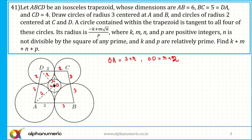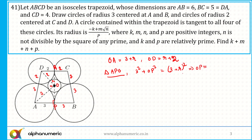Let P be the point of tangency on side AB and Q be the point of tangency on side CD. The angle at the tangency point is 90 degrees. In triangle APO, applying Pythagoras: 3² plus OP² equals (3 plus R)², which gives OP equals root of (6R plus R²).